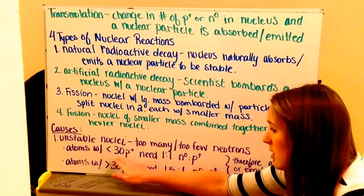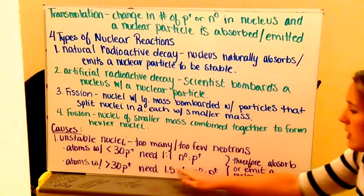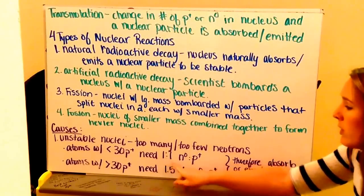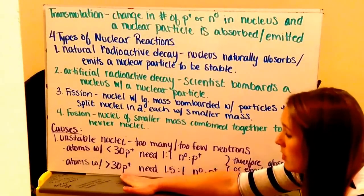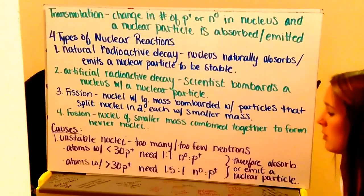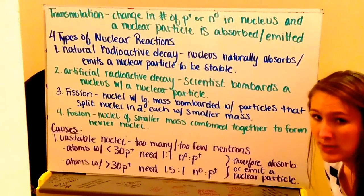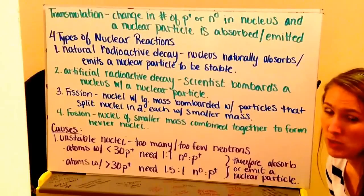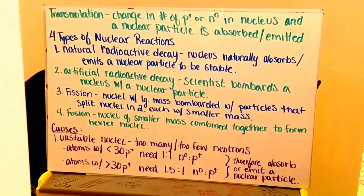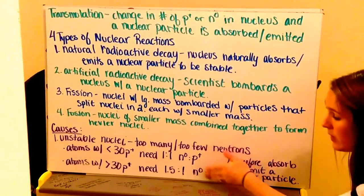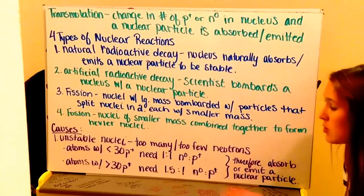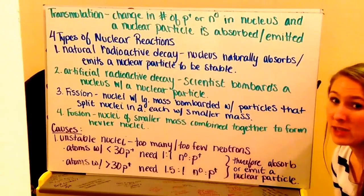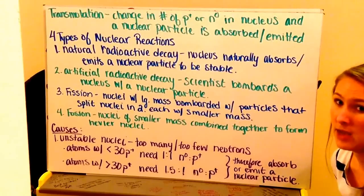So atoms that have less than 30 protons are going to need a ratio of neutrons and protons of about 1 to 1, because it has a number that it can handle. The atoms that have more than 30 protons are going to need a ratio of 1.5 neutrons for every one proton to have more buffer in between those protons because it's so positively charged. So if it doesn't have this ratio here, it's going to either absorb or emit a nuclear particle, any one of the ones we just talked about previously, in order to attain this ratio. And that's where you have this natural radioactive decay occurring.